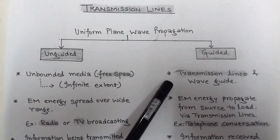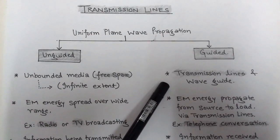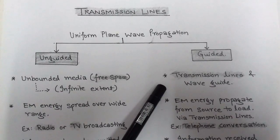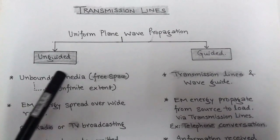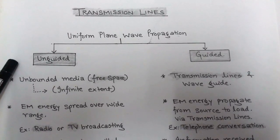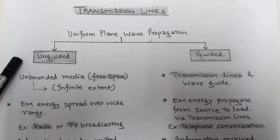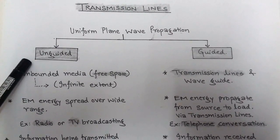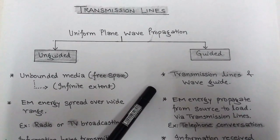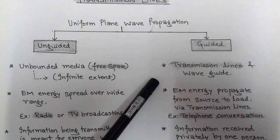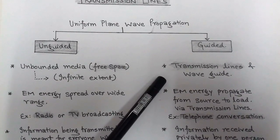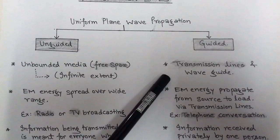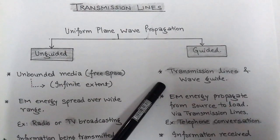Communication is of two types: line communication and radio communication or wireless communication. Unguided propagation falls under the category of wireless communication, where free space is used. Line communication uses some physical line medium, where the electromagnetic wave propagates with the help of transmission lines — this is called guided propagation.